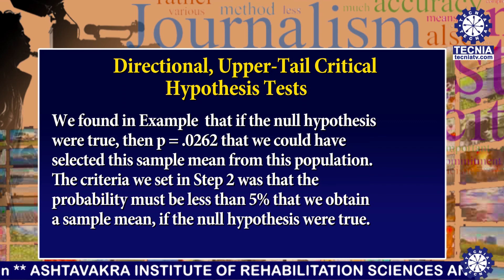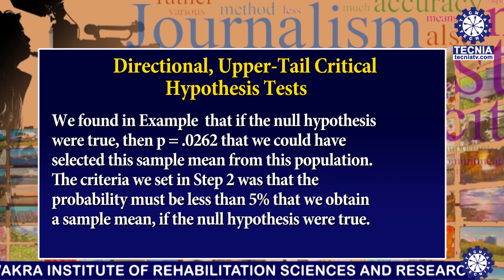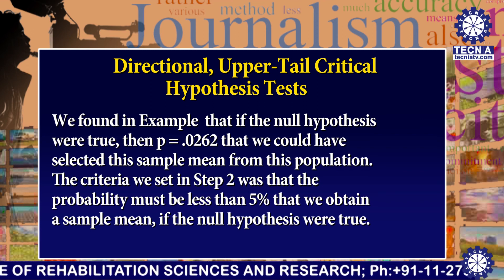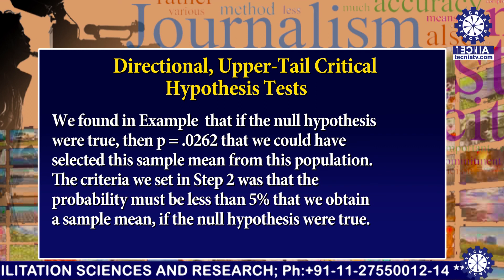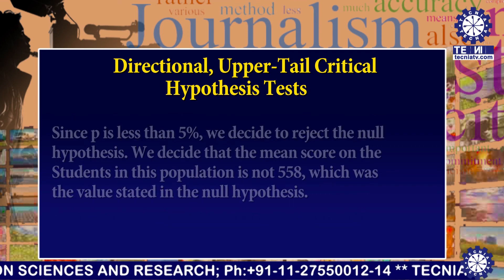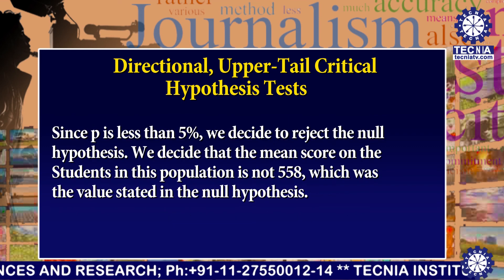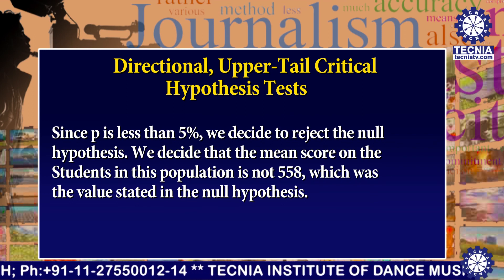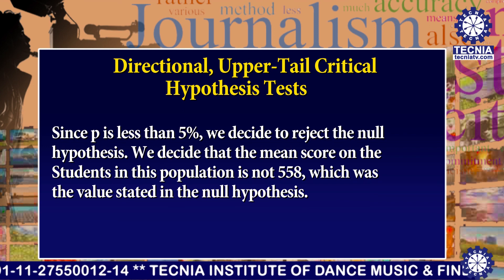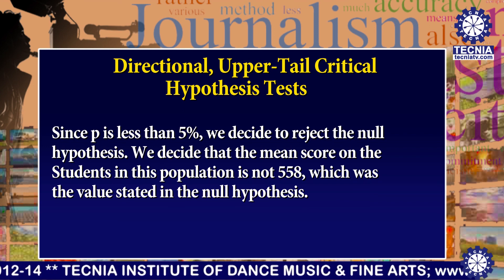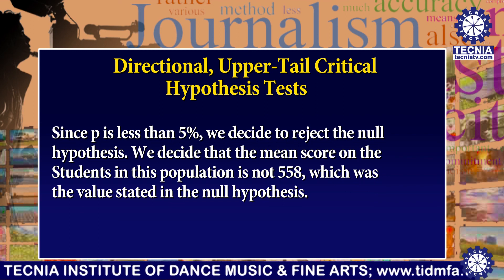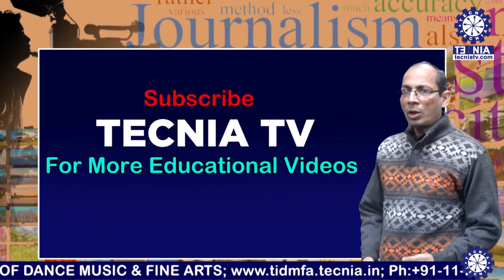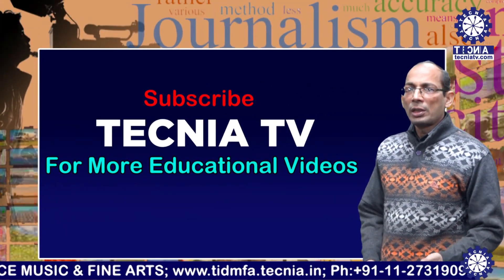The criteria set in Step 2 was that the probability must be less than 5 percent to obtain a sample mean if the null hypothesis were true. Since p is less than 5 percent, we decide to reject the null hypothesis. We decide that the mean score of students in this population is not 558, which was the value stated in the null hypothesis. This is the conclusion of my lecture. Thanks a lot. Watch and subscribe Technia TV.